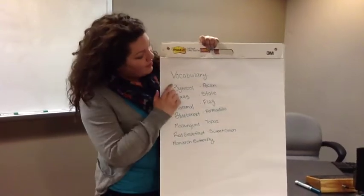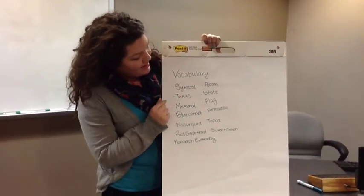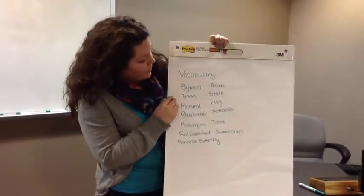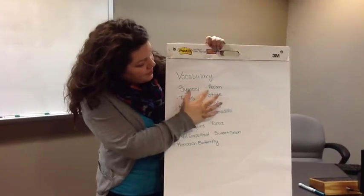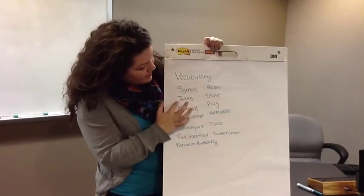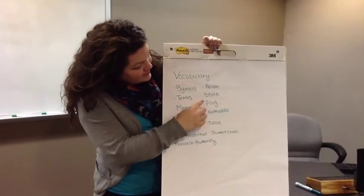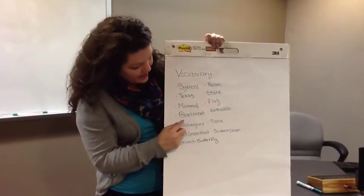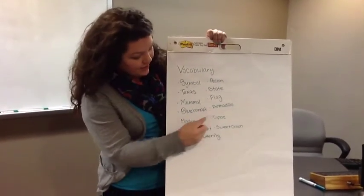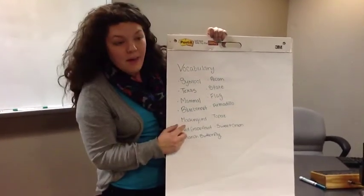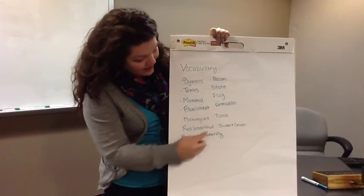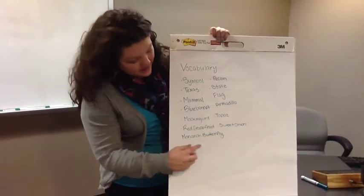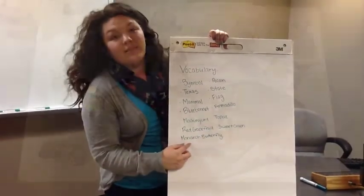We pulled some vocabulary words from our text, and these are the words that we'll include on our circle map. The words include symbol, pecan, Texas, state, mammal, flag, bluebonnet, armadillo, mockingbird, topaz, red grapefruit, sweet onion, and monarch butterfly.